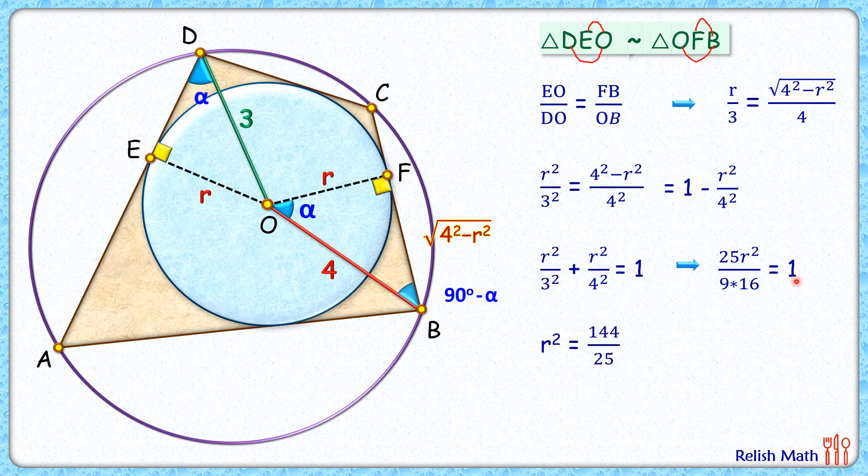Simplifying it, r squared is 9 times 16, which is 144 by 25. R is 12 by 5, and that's our answer. I hope you enjoyed the solution. I will see you in the next video. Till then, tata bye bye.